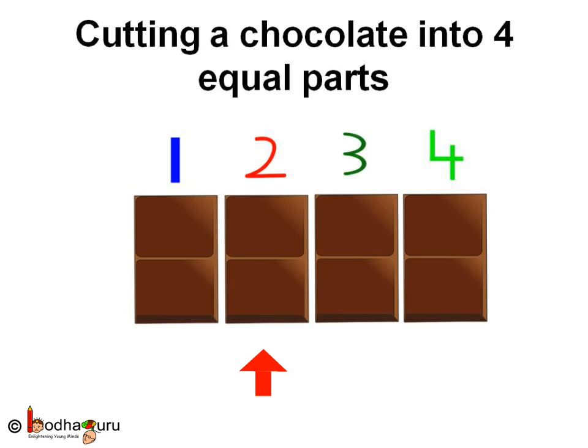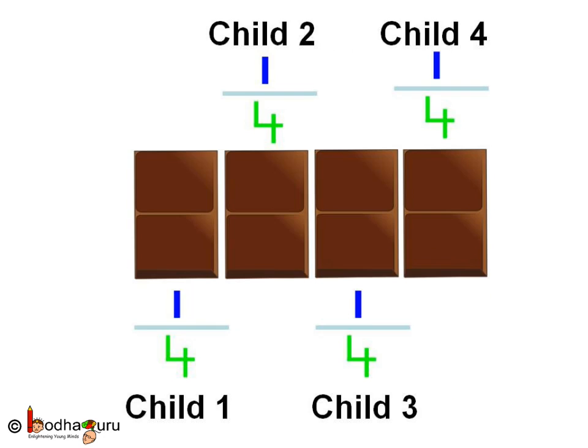One part, two parts, three parts, and four parts. So each of the four children shall get one fourth part. Child number one — one fourth part. Child number two — one fourth part. Child number three — one fourth part. And child number four — one fourth part. So all get an equal share.